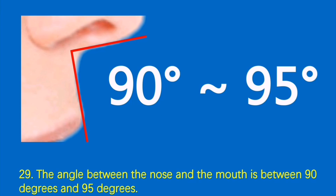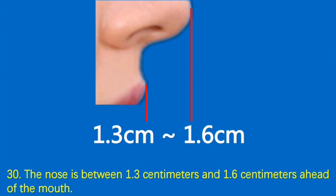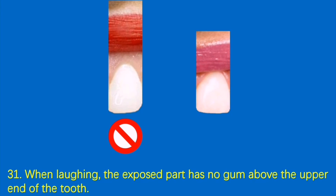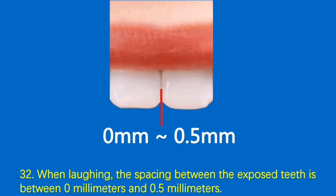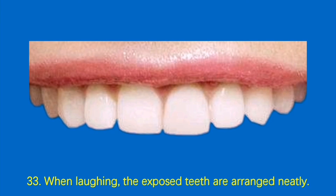Condition 29: The angle between the nose and the mouth is between 90 degrees and 95 degrees. Condition 30: The nose is between 1.3 centimeters and 1.6 centimeters ahead of the mouth. Condition 31: When laughing, the exposed part has no gum above the upper end of the tooth. Condition 32: When laughing, the spacing between the exposed teeth is between 0 millimeters and 0.5 millimeters. Condition 33: When laughing, the exposed teeth are arranged neatly.